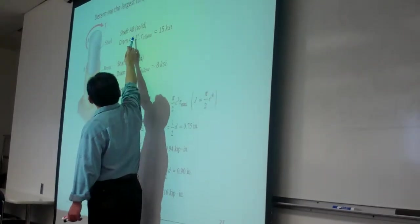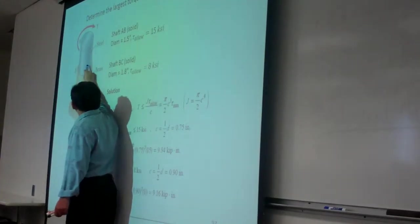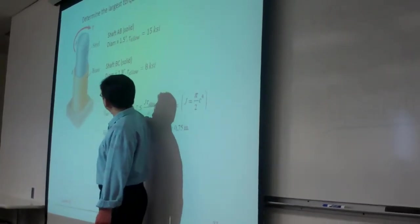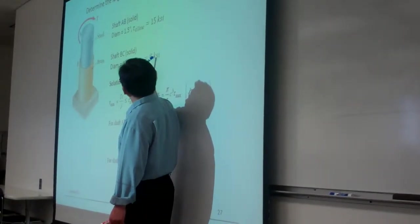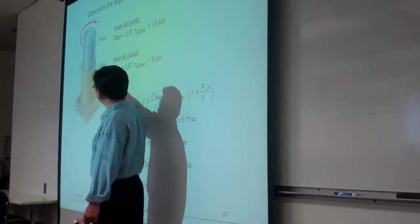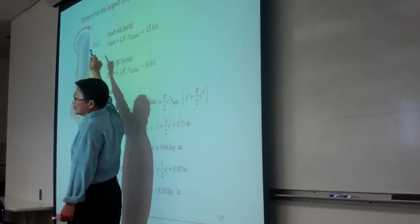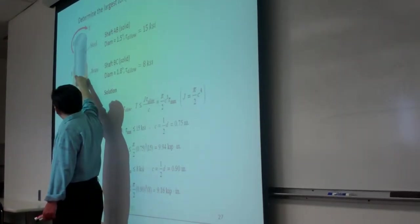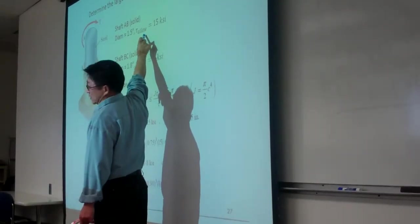For the allowable stress for steel, it is 15 KSI. And for shaft BC, the diameter is 1.8 inches and the allowable is 8 KSI. We have the allowable information and the geometry, and we want to determine the maximum torque T that can be applied such that all the stresses within the two portions will satisfy the given constraints.